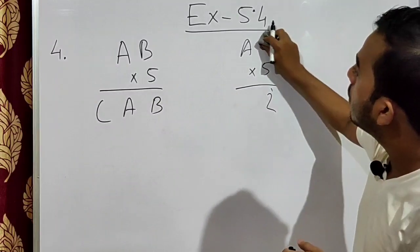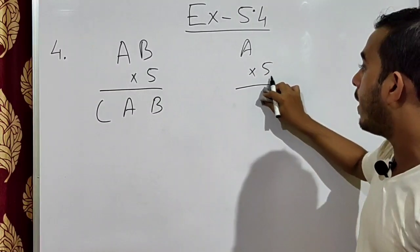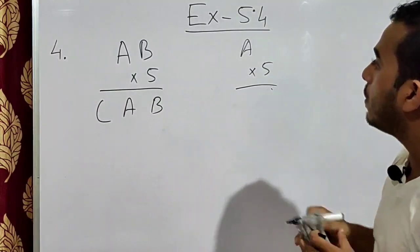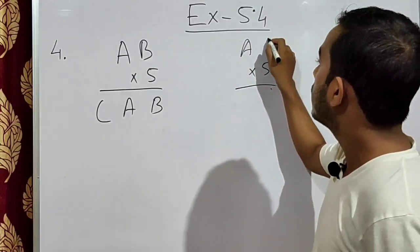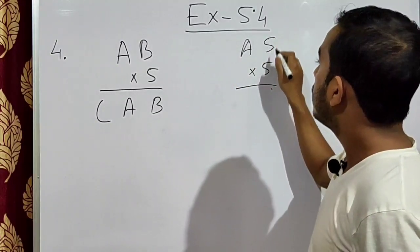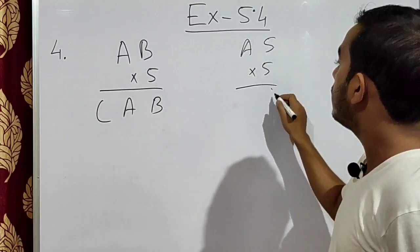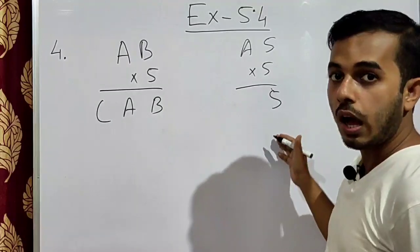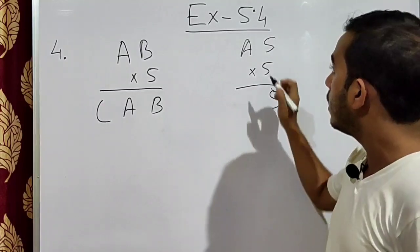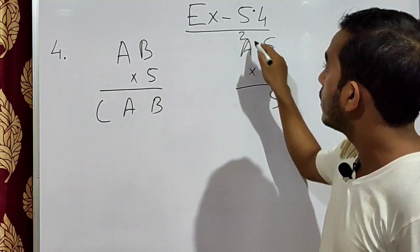Continuing: if B is 3 or 4, also not possible. If B is 5, then 5 into 5 is 25 — unit digit is 5, which matches B. So B equals 5, and we have remainder 2.